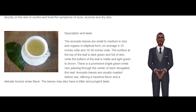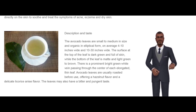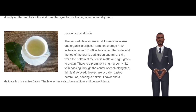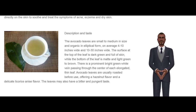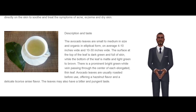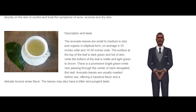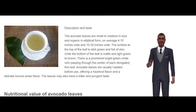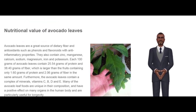Description and Taste. The avocado leaves are small to medium in size and elliptical in form, on average 4 to 10 inches long and 10 to 30 inches wide. The surface at the top of the leaf is dark green and glossy, while the bottom of the leaf is matte and light green to brown. There is a prominent bright green-white vein passing through the center of each elongated thin leaf. Avocado leaves are usually roasted before use, offering a hazelnut flavor and a delicate licorice-anise flavor. The leaves may also have a bitter and pungent taste.